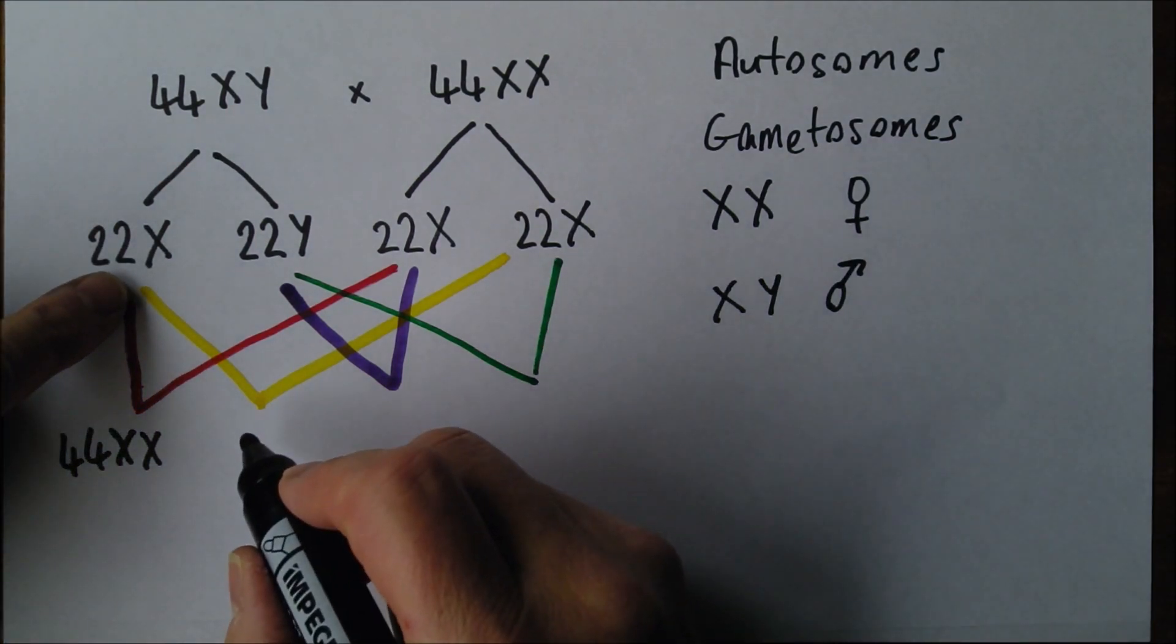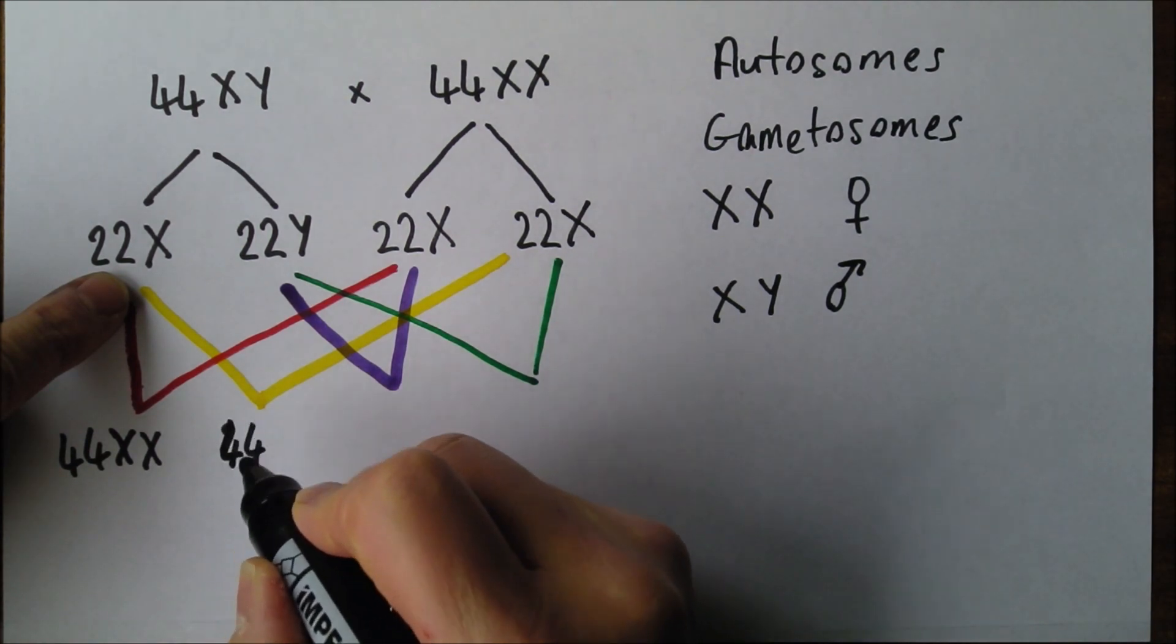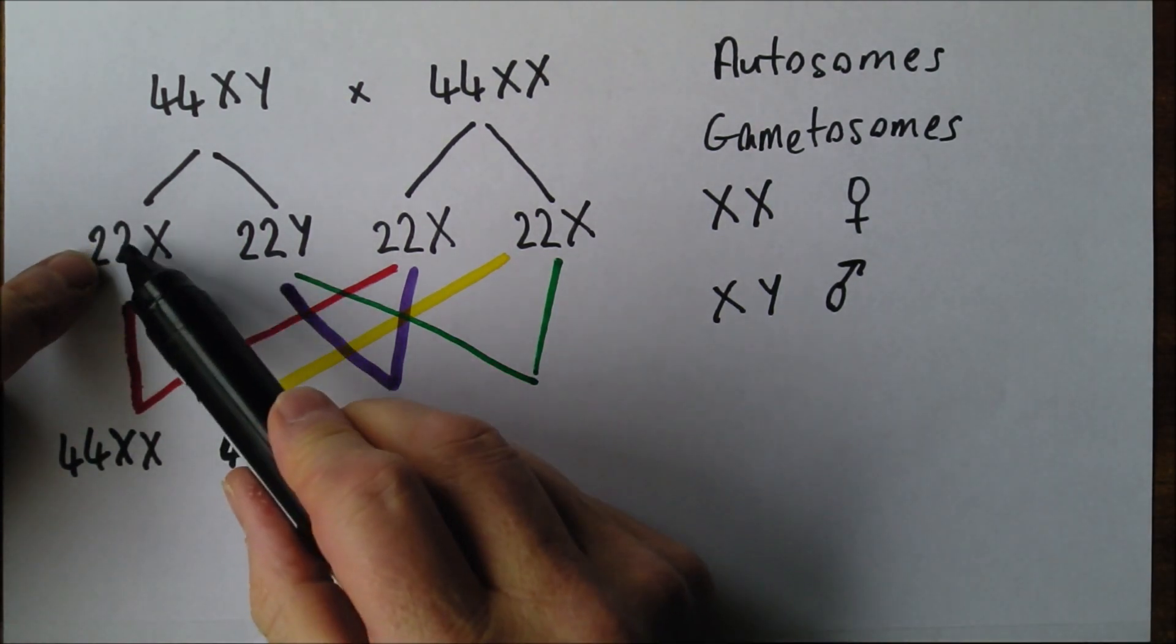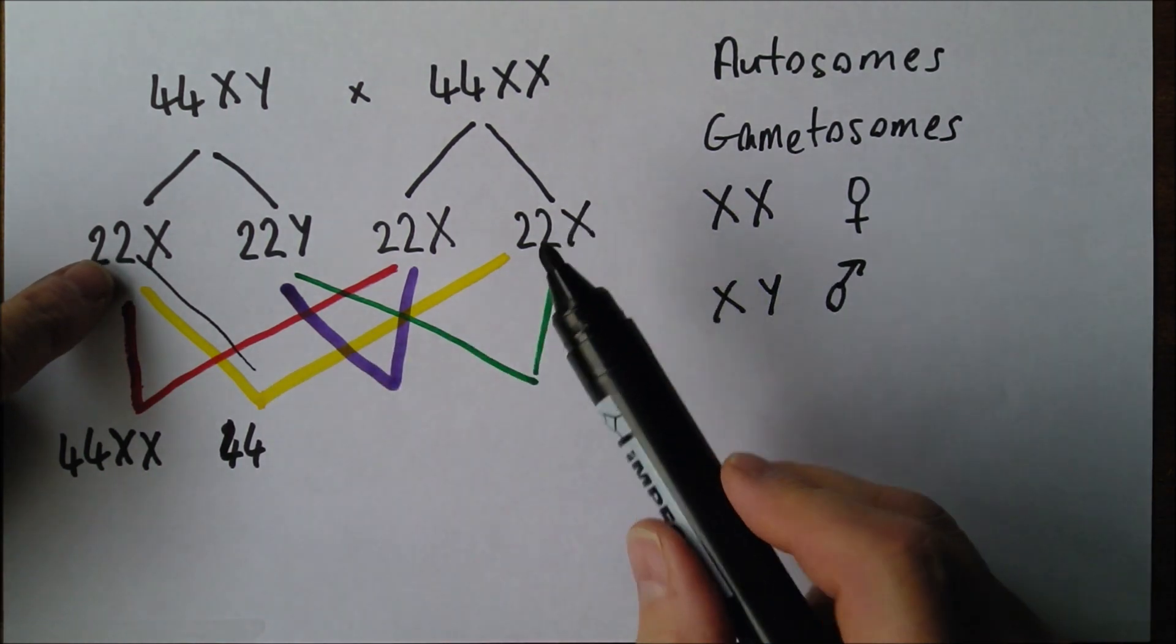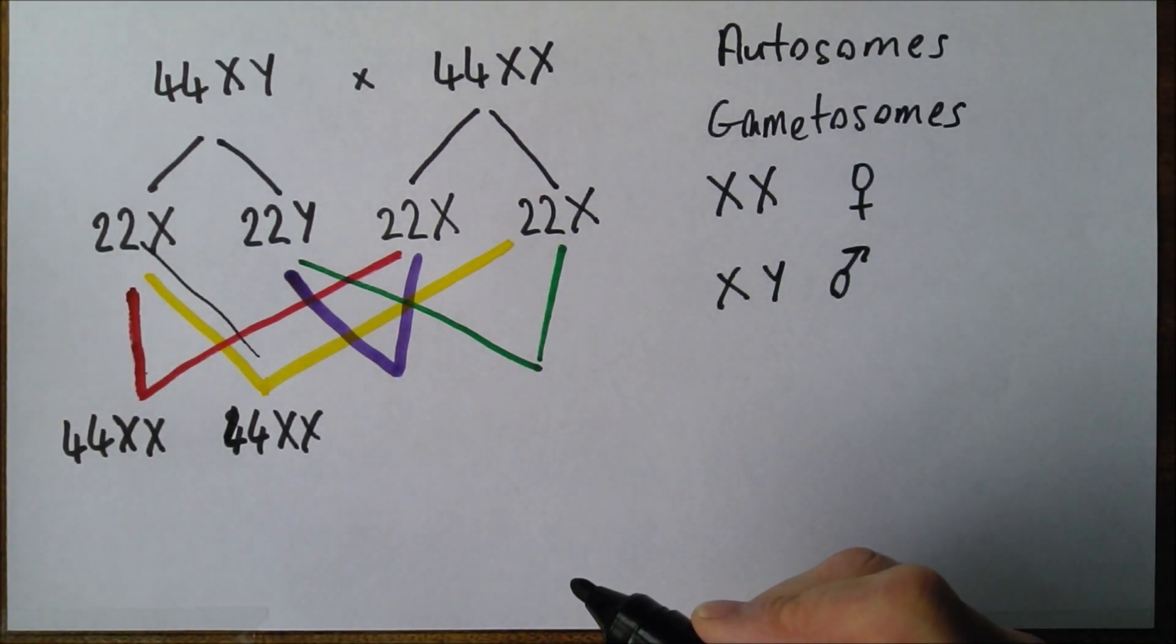But if it was that one there, 22 and 22 gives us 44, and again that one contains an X and that one contains an X. So that's XX again. So that's going to be a baby girl.